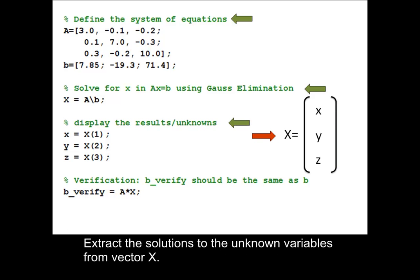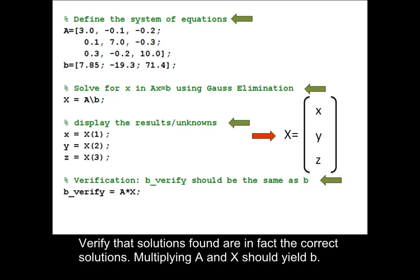Extract the solutions to the unknown variables from vector X. Verify that the solutions found are in fact the correct solutions. Multiplying A and X should yield B.